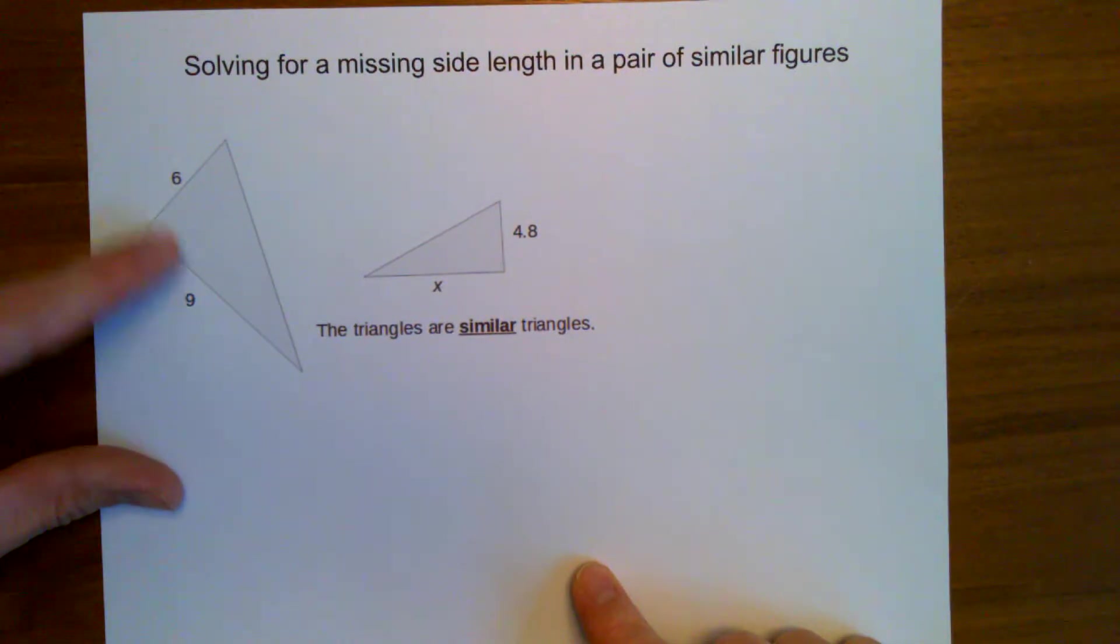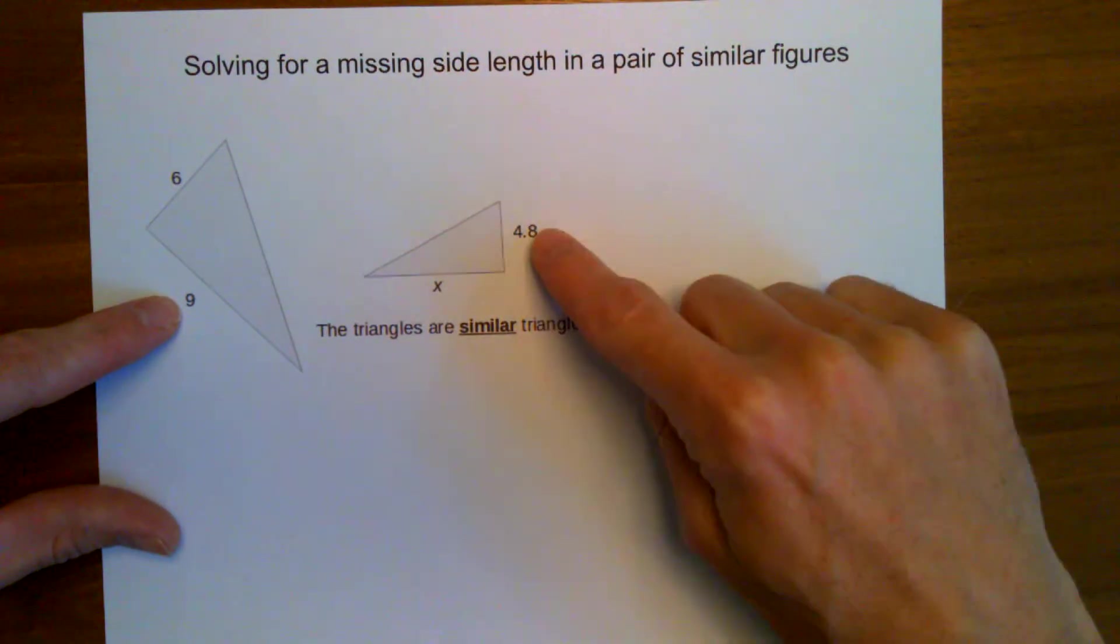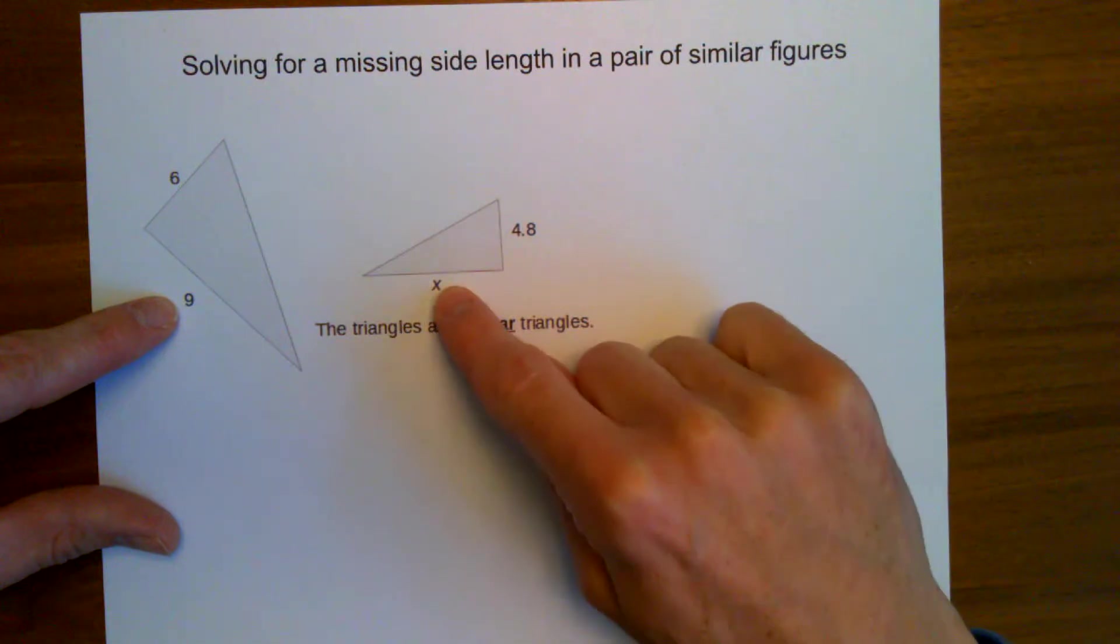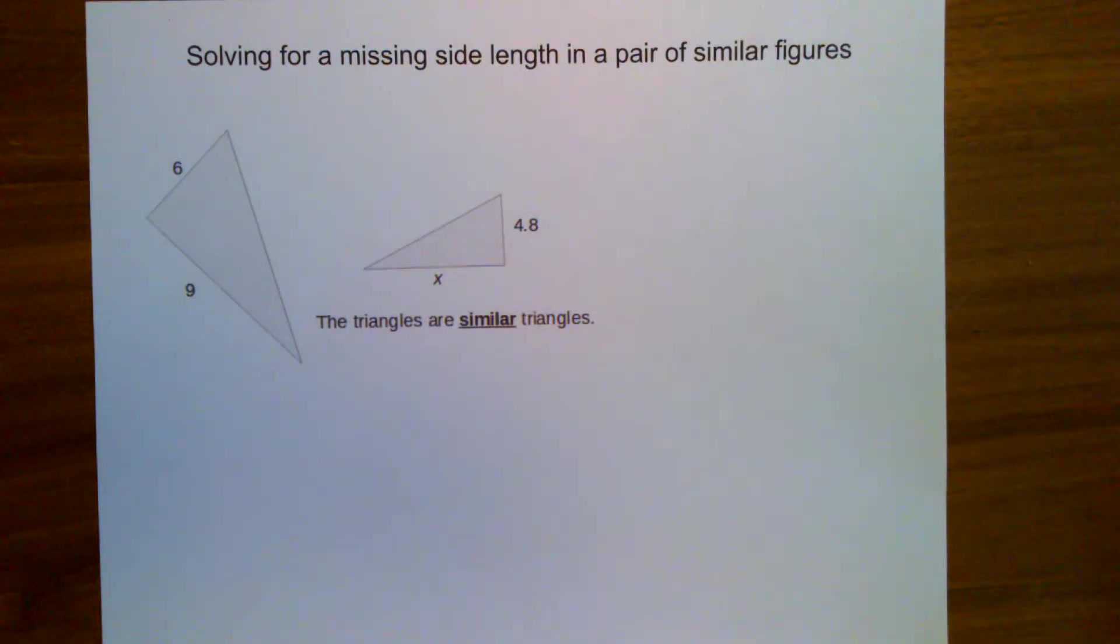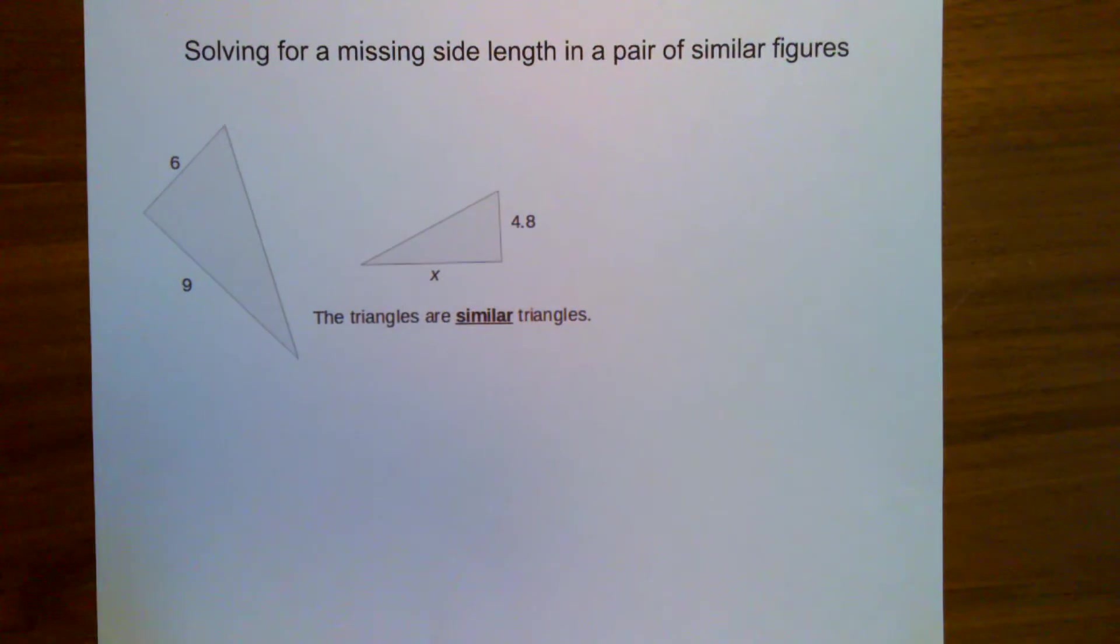In this larger triangle, I know these two side lengths. In the smaller triangle, I know this side length, but this one is missing. How can I determine what this side length needs to be?